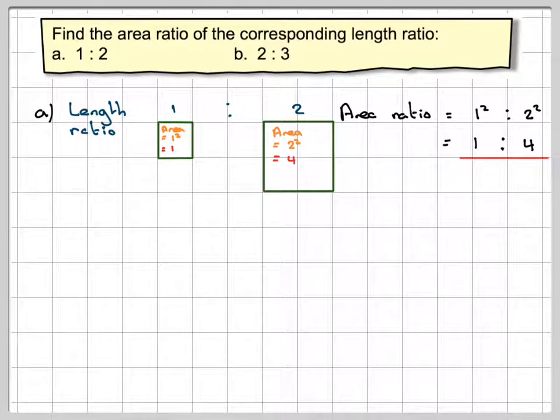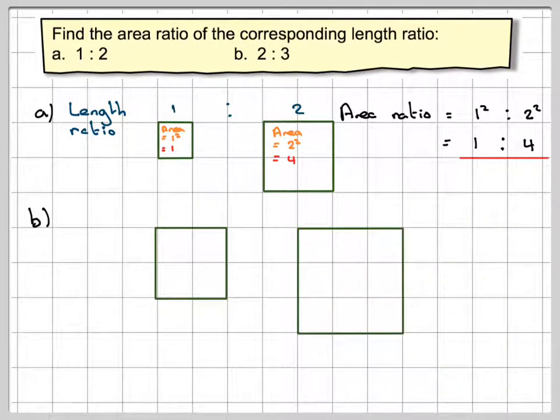If we take the next example which is 2 to 3, draw one square 2 by 2 and another square 3 by 3 and do exactly the same thing. The length ratio will be 2 to 3.